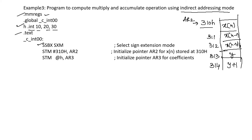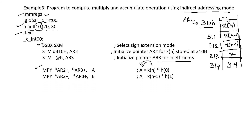Store memory at @H to AR3 — AR3 is used for coefficient access. Perform the first multiplication: *AR2+ (which is x(n)) with *AR3+ (which is H(0) = 10), and store the result in accumulator A. Similarly, perform the multiplication of x(n-1) with H(1) using MPY *AR2+, *AR3+, and store the result in accumulator B.